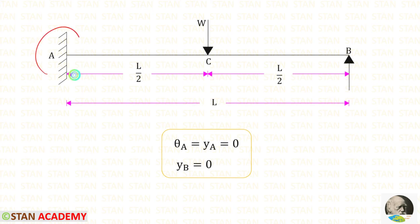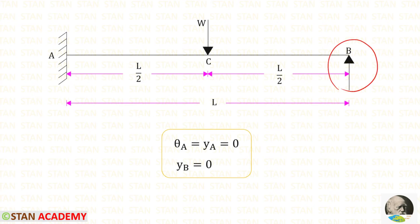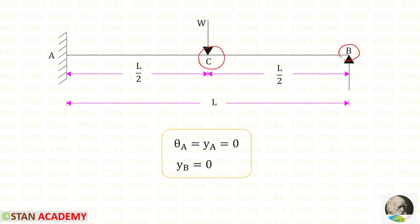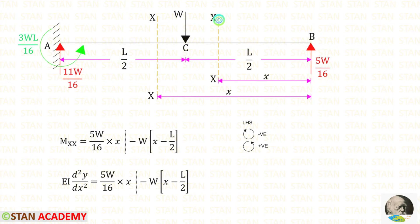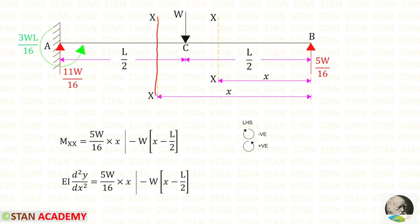In this beam, point A has a fixed support, so slope and deflection at A are both 0. At point B there is a vertical support, so there is no deflection but there will be slope. We are going to find the slope at B and the slope and deflection at center C using Macaulay's method. We make two sections — one in AC and one in CB — both at a distance x from point B.